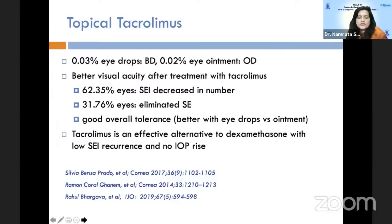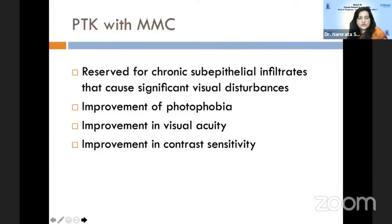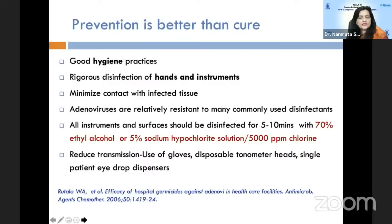In cases not responding to topical steroids, topical tacrolimus can be added. Both the eye drop 0.03% and ointment 0.02% have given good results. Recent publications in Indian Journal of Ophthalmology suggested the ointment was probably better than the eye drops. Topical antivirals such as IDU (idoxuridine) 1% have been tried 4 to 10 times a day, and although it decreased corneal opacities, local toxicity was higher with pseudomembrane development and lacrimal duct stenosis. For the sub-haze from sub-epithelial infiltrates, PTK with mitomycin C has been done to improve visual acuity, photophobia, and contrast sensitivity.